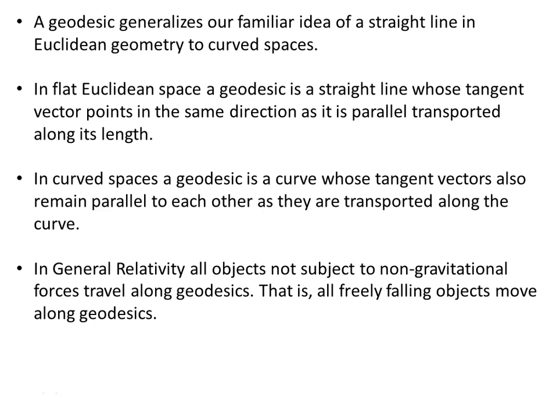A geodesic generalizes our familiar idea of a straight line in Euclidean geometry to curved spaces. In flat Euclidean space a geodesic is just a straight line, whose tangent vector points in the same direction as it is parallel transported along the length of the straight line. In curved spaces a geodesic is a curve whose tangent vectors also remain parallel to each other as they are transported along the curve. In general relativity, all objects not subject to non-gravitational forces travel along geodesics — that is, all freely falling objects move along geodesics.